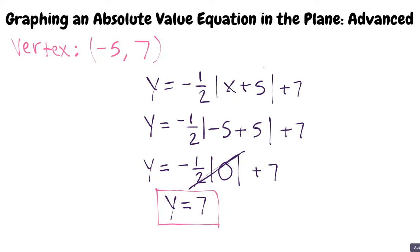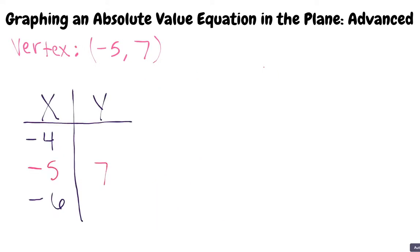What do we do next? Do we plot it on the plane? Not yet. First, we need a couple other points on the graph to accurately plot the equation. Since our x value of the vertex is negative 5, let's pick two x values on either side of the vertex. Next, plug both negative 4 and negative 6 into the original equation.